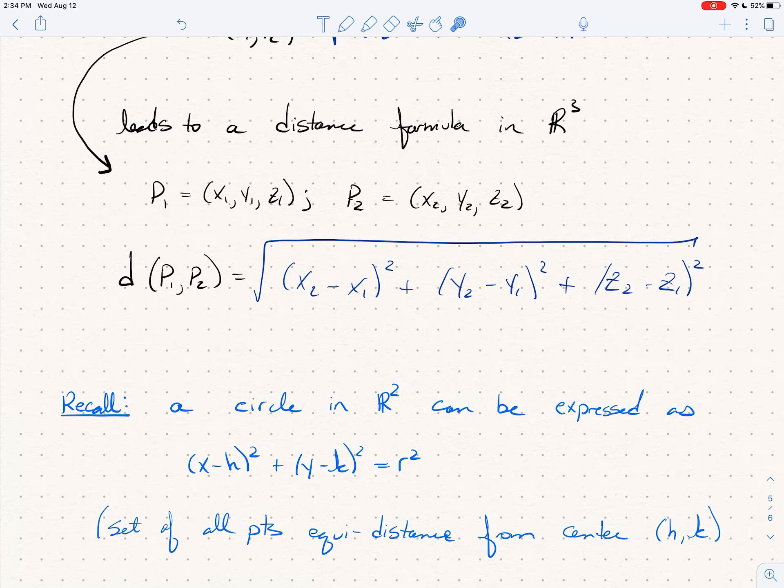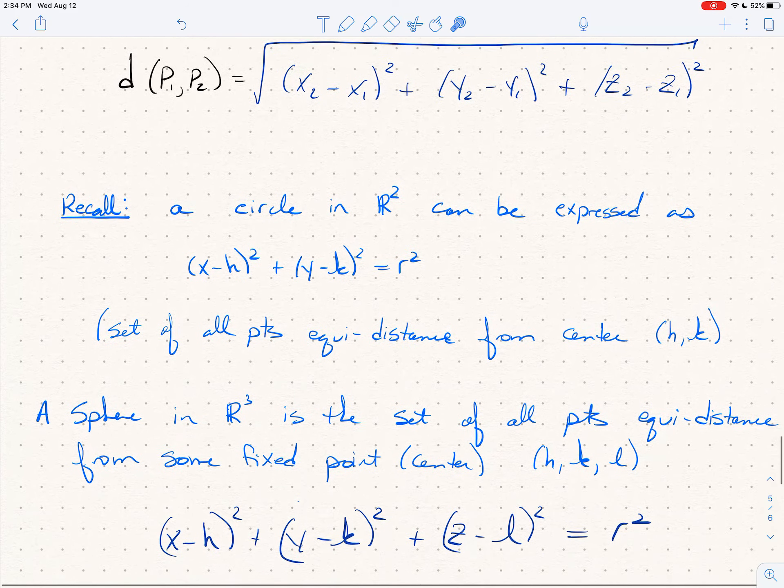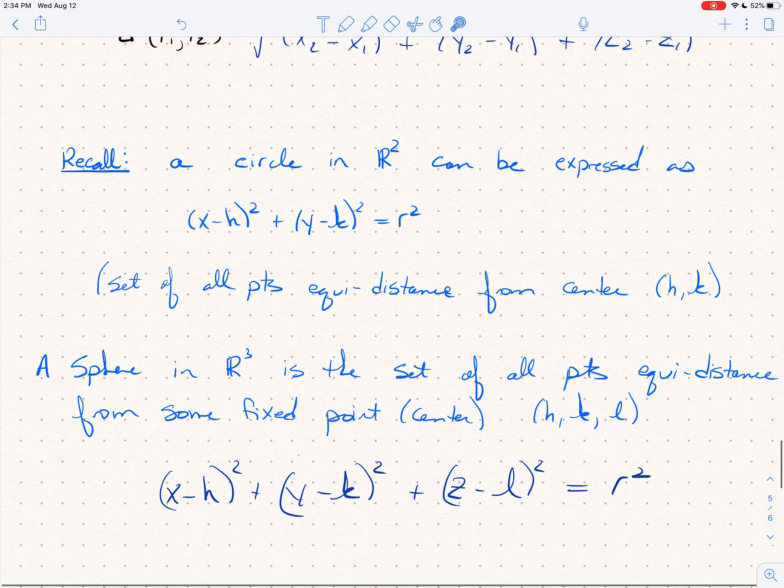There's actually different ways you can define distance, it gets really interesting, but the point is simply this: a sphere in R³ I want us to think about is the set of all points that are the same distance, equidistance, from some fixed point which we'll call the center. And I'm going to mark the center usually by (h, k, l).